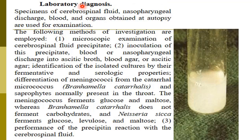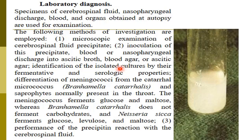In laboratory diagnosis of meningitis, the specimen of choice is CSF — cerebrospinal fluid. Also nasopharyngeal discharge and blood — especially in sepsis — are used. Methods of investigation include: microscopic examination of CSF precipitate; inoculation of the precipitate, blood, or nasopharyngeal discharge into ascitic broth, blood agar, or ascitic agar; and identification of the isolated culture by fermentative and serological properties.